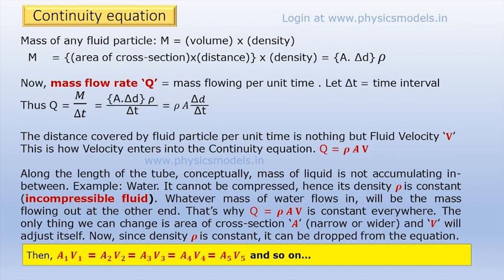Let's derive the equation. Mass flow rate — there are three words: mass, flow, and rate. The moment we say rate, time comes into the picture. So Q equals mass flow m divided by time delta t. The mass m equals volume times density, where density is rho. Volume is area of cross section times the length traveled by the liquid, so that's A times delta d. When you rearrange that you get rho times A times delta d divided by delta t. Distance divided by time is nothing but velocity — the velocity of the liquid. So we get the mass flow rate as rho times A times V. Now rho is constant because the liquid is incompressible, therefore A·V is constant. That's how you get A1·V1 = A2·V2 and so on.